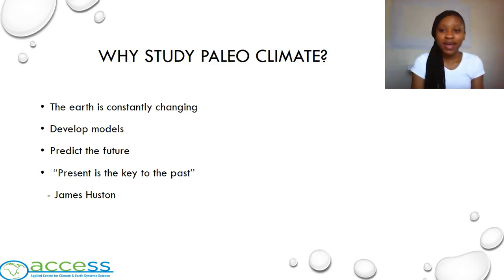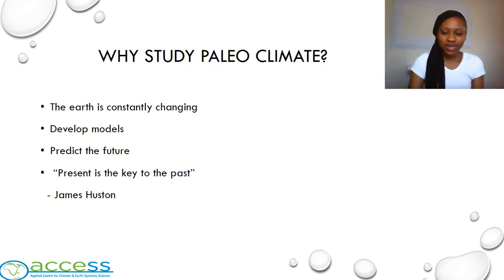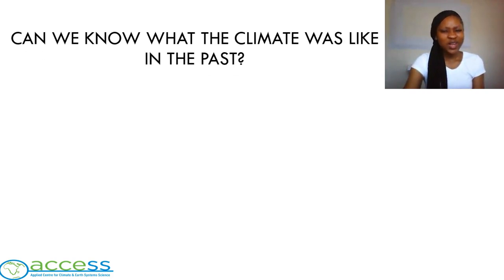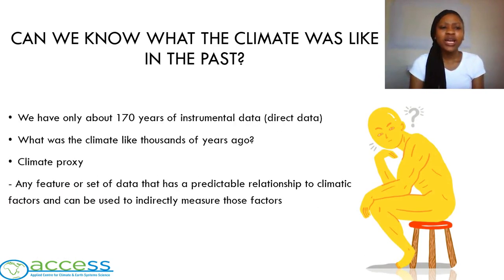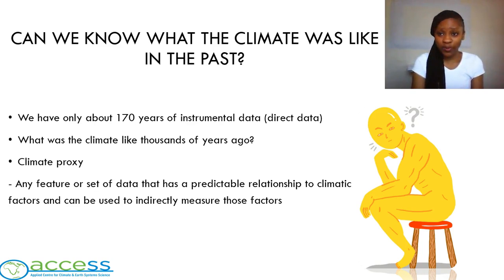A wise man by the name of James Hutton once said the present is the key to the past. What that means is that we need what we have today in order to investigate what the past was like, so that we may be able to predict what the future will be like. Can we really know what the past climate was like? We only have about 170 years of instrumental data, which is direct. So what was the climate like thousands or maybe millions of years ago? In order to find that out, we use climate proxies.